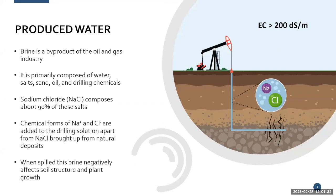First of all, where does the salinity come from? Especially out here out west, a lot of our salinity is often a result of brine spills. Brine is a byproduct of the oil and gas industry, specifically when we use hydraulic fracking. We use water that we pump down into the oil and gas deposits to break it up to get that oil and gas to the surface.